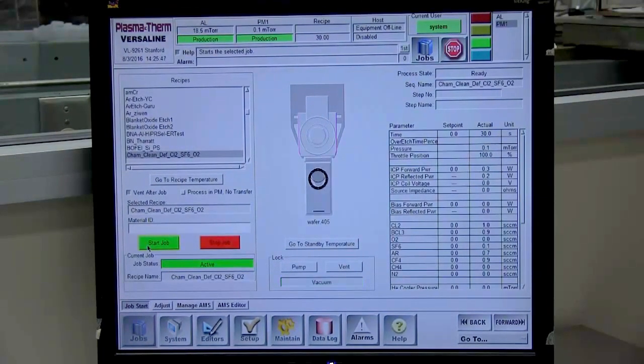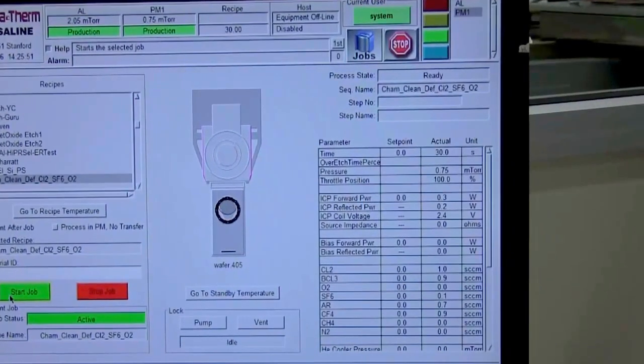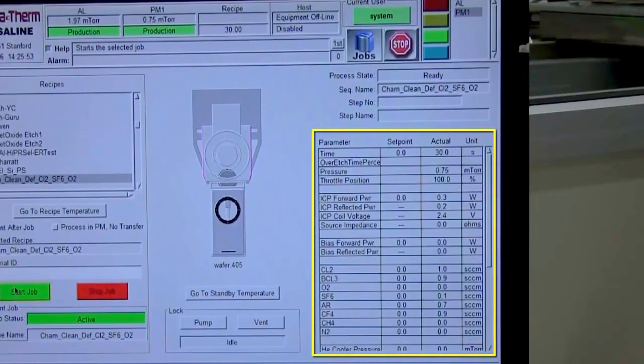Once the processing begins, details of the process recipe and the process parameters, set points, and actuals will appear on the right side of the job screen.